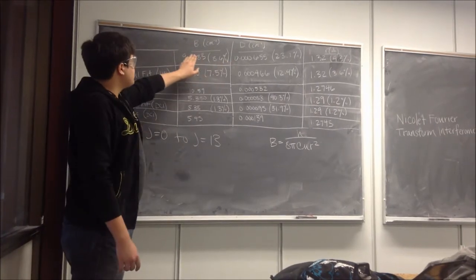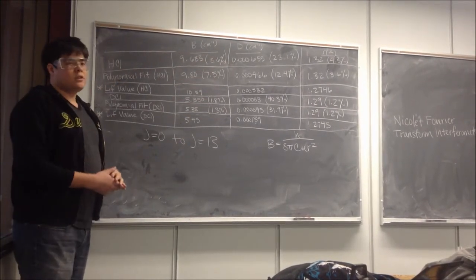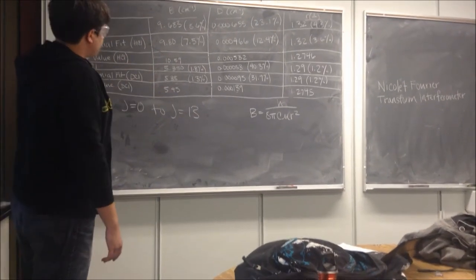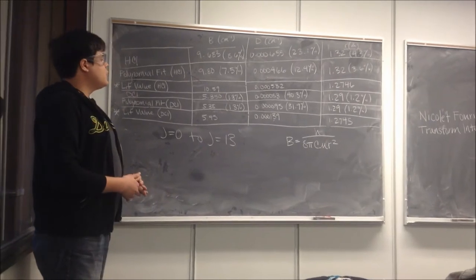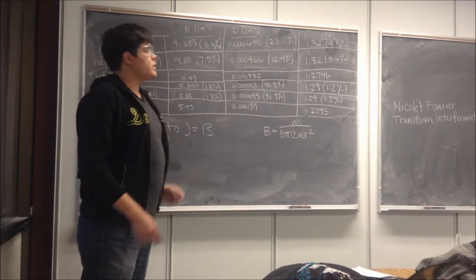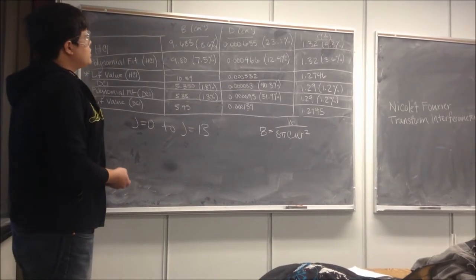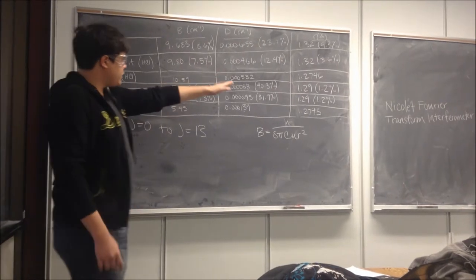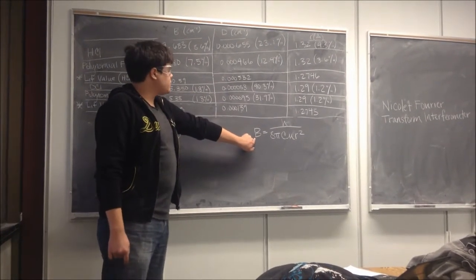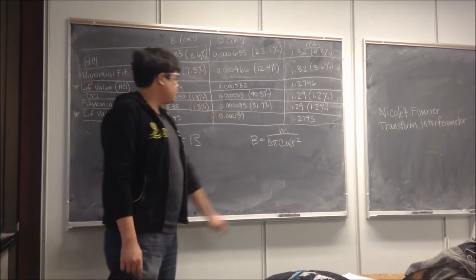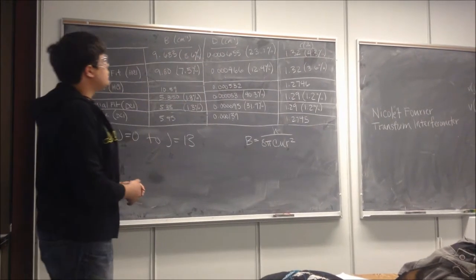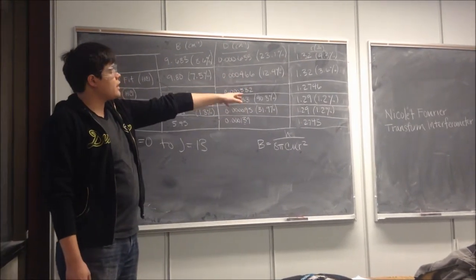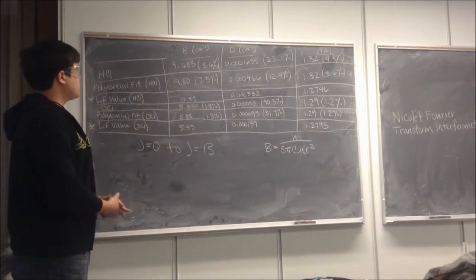Next to each of these values, we have in parentheses percentages representing the error from our experimental data relative to the literature value. The literature values were found using the NIST website, the National Institute of Standards and Technology. The third column represents the bond length, also known as the internuclear separation, in angstroms, unlike the first two which are in wave numbers. In order to get the internuclear separation, we used the equation to solve for the rotational constant and isolated the bond length for HCl and DCl, with percent errors relative to literature values.